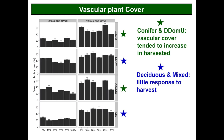Looking at vascular plant cover — to simplify, I'm focusing on the two-year and ten-year time periods post-harvesting — we have our four forest types: conifer dominated, deciduous dominated, deciduous dominated with conifer understory, and mixed. Along the bottom we have harvest levels from the clear cut with 2% retention up to the unharvested control. For the conifer dominated and the DDOM-U forest types, vascular cover tended to increase in the harvested areas. That's not unexpected — remove the canopy, more light reaches the understory, and understory plants respond. For the other two forest types there was very little response to harvesting in terms of total understory plant cover.